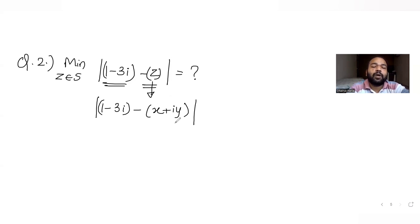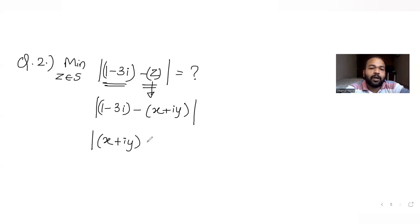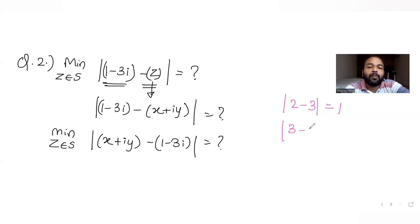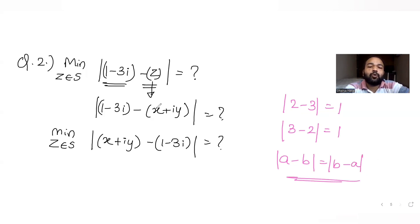Now, instead of taking it like this, if I take it in the opposite sense, I can also write it as (x + iy) minus (1 minus 3i). We are going to find the distance of point (x, y) from (1, -3). The idea I use here is: mod of (2 minus 3) is the distance of point 2 from 3, which equals 1. Similarly, mod of (3 minus 2) is also 1. So mod of (a minus b) equals mod of (b minus a). That is the key idea.